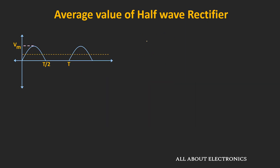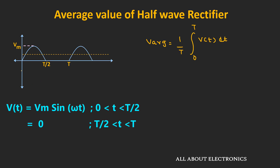For any waveform, the average value can be given as (1/T) × integral from 0 to T of V(t) dt, where V(t) is the signal varying in the time domain. For the half-wave rectifier, the signal varies as a sine wave for 0 to T/2 time period, and for the remaining time period the output is 0. So we can say that the average value for the half-wave rectifier will be equal to (1/T) × integral from 0 to T/2 of Vm·sin(ωt) dt, plus 0.